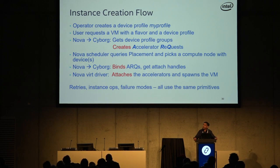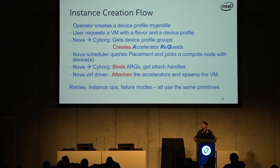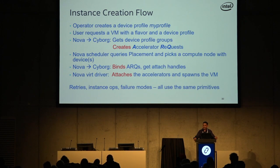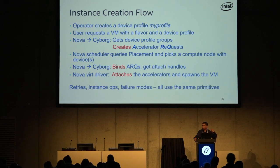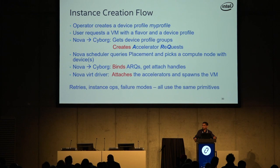[Question: Why would Nova talk to Cyborg to create the accelerator? I thought Cyborg uploads all the accelerators available in Placement, and Nova would talk to Placement to see what host has the right accelerator.] The question is, why does Nova even need to talk to Cyborg if Cyborg already represented all devices as providers and resources in Placement? The reason is that to actually attach an accelerator you need something like a PCI-VF or a mediated device UUID. We also want to program the device — for example, if it's a blank FPGA, we want to apply a gzip bitstream before the VM comes up. So you have to let Cyborg have a hook in between.